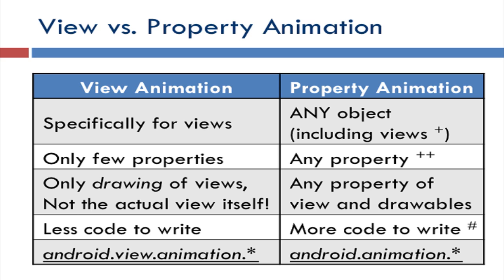First of all, view animation is specifically for views — text views, buttons, image views, or views in general. However, property animation can be applied on any object, including views. Views are also objects, so it can be applied on anything. The second difference is that view animation can be applied only on a few properties, for example translation, rotation, or x and y position. However, since property animation deals with any object, it can be applied on any property.